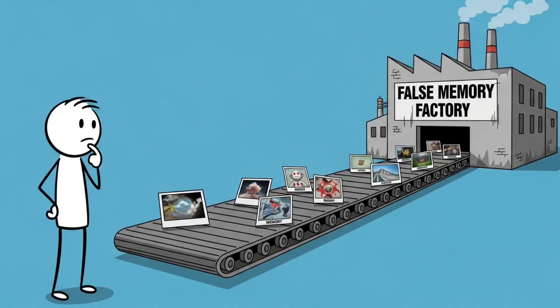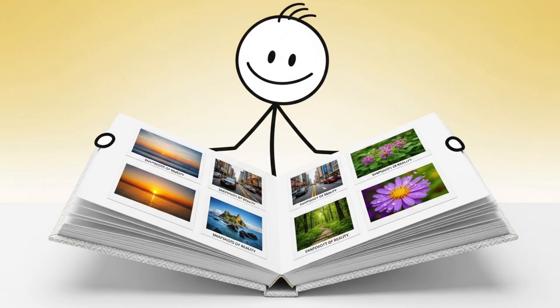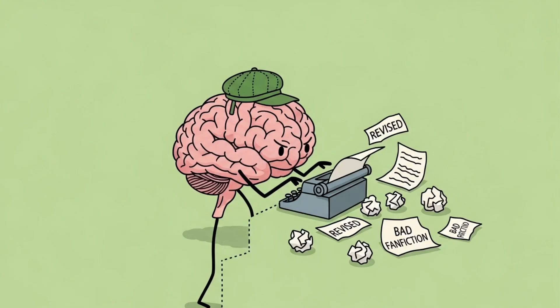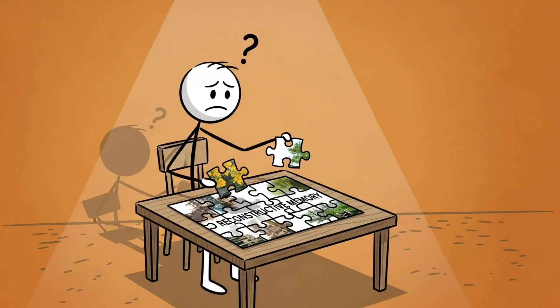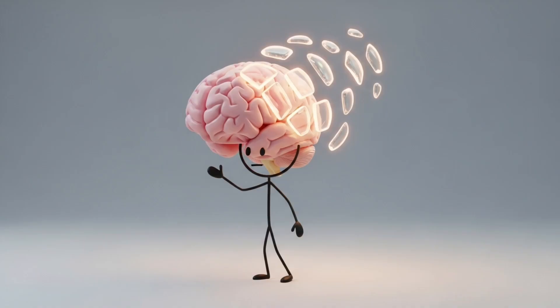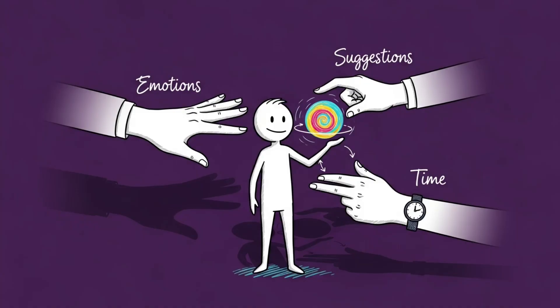Number 7: The False Memory Factory. You'd like to think your memories are like photos — crisp, reliable snapshots of reality. Spoiler: they're not. They're more like bad fan fiction written by your brain and revised every time you remember them. This is called reconstructive memory. Every time you recall something, your brain rebuilds the memory from fragments, and each rebuild slightly distorts it. Add emotions, external suggestions, or time, and congratulations — you now believe things that never happened.